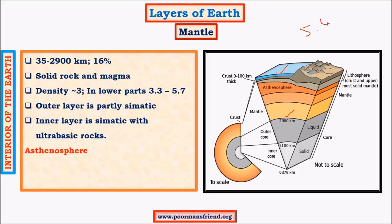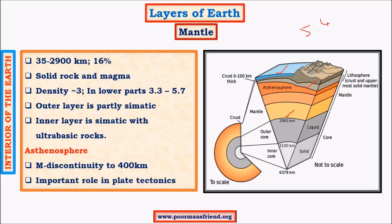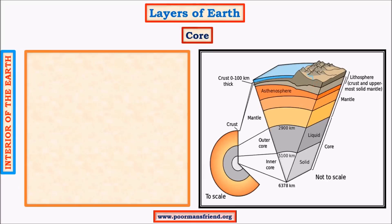The asthenosphere is an important part of the mantle, extending up to 500 km below the earth's crustal layer, and facilitates plate tectonic movement. The core is the most important layer responsible for most of the forces on the earth's surface. It is very hot due to radioactive decay and other heat sources remaining from the formation of the earth in the solar system.